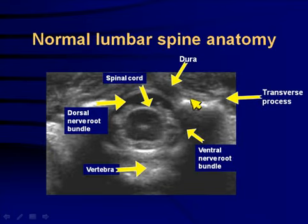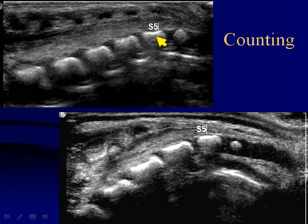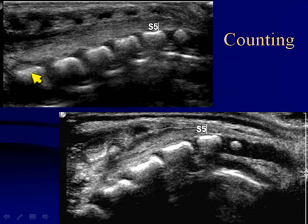Here again we have the transverse process, the cord, the central canal, and the nerve roots. When counting, we start from below. The coccyx tends to be a more circular structure than the sacral elements. Once the coccyx is identified, we can start from S5, 4, 3, 2, 1, and count upward. Generally, the L5-S1 level has a mild transition where the bowing or bending change is seen.